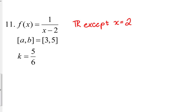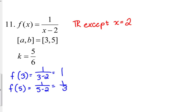Is that an issue though with this interval? No. The interval is from 3 to 5. The discontinuity is outside of that interval, so our function is continuous on this interval from 3 to 5. So we are good to proceed. F of 3 is equal to 1 over 3 minus 2, which is just 1. F of 5 is equal to 1 over 5 minus 2, which is 1 third. Ooh, this is fun. Fractions. Is 5 sixths between 1 and 1 third? Hmm, it is.